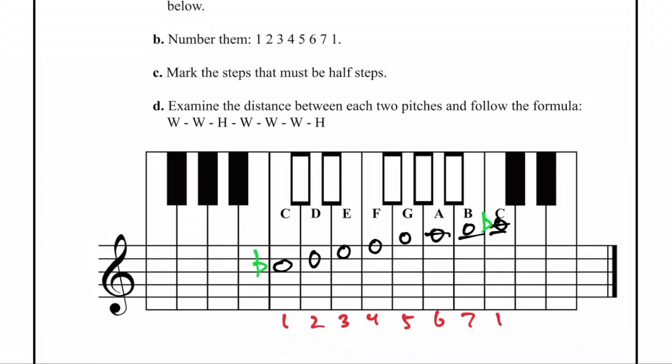Rule number three, write the intervals. We have whole, whole, half for our first tetrachord, a whole step, then our second tetrachord: whole, whole, half.